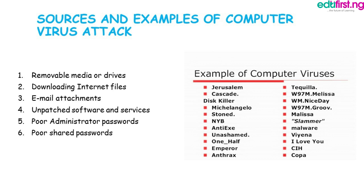On the right side of the screen you can see different examples of computer viruses: Jerusalem, Cascade, This Killer, Michelangelo, Stoned, NYB, Anti-EXE, Unashamed, One-Half, Emperor, Anthrax, Tequila, W97M/Elisa, Nice Day, W97M/Group, Melissa, Slammer, Malware, Vienna, I Love You, CIH, Copper — and there are many more viruses not listed here.